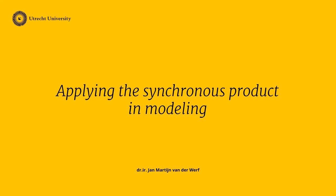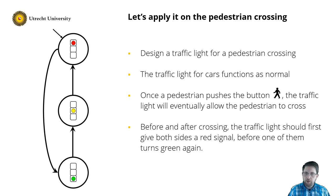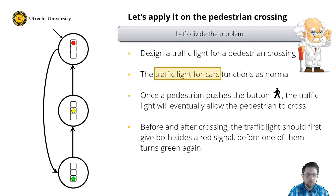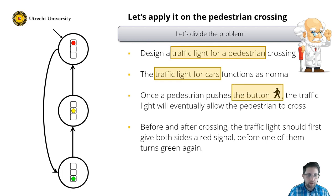In this clip I will show how the synchronous product can be used in modeling. Let's apply the synchronous product on the pedestrian crossing. How can we divide the problem into smaller parts? We have a traffic light for cars, a traffic light for pedestrians, and a button for pedestrians. We can build small LTSs for each of them.